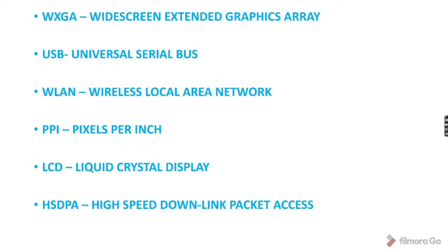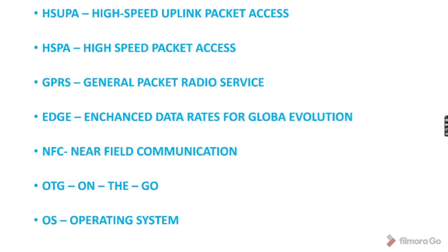WXGA: Wide Screen Extended Graphics Array. USB: Universal Serial Bus. WLAN: Wireless Local Area Network. PPI: Pixels Per Inch. LCD: Liquid Crystal Display. HSDPA: High Speed Downlink Packet Access. HSUPA: High Speed Uplink Packet Access. HSPA: High Speed Packet Access. GPRS: General Packet Radio Service. Edge: Enhanced Data Rate for Global Evolution.